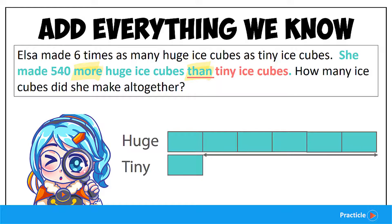And this difference, my dear friends, happens to be five units. So that's how we know that the extra 540 ice cubes refers to these five units over here.